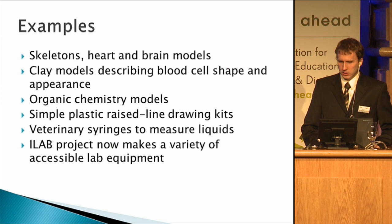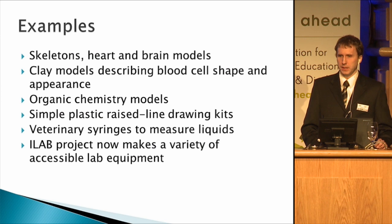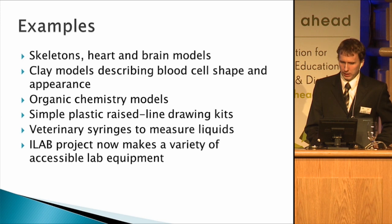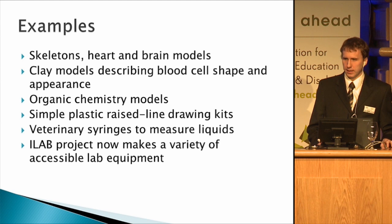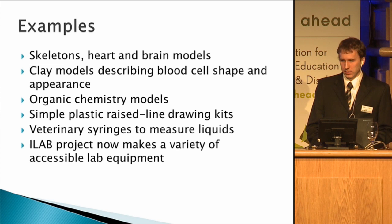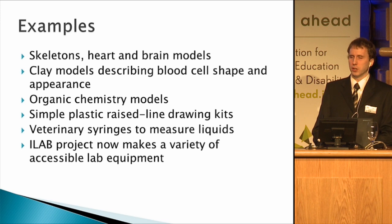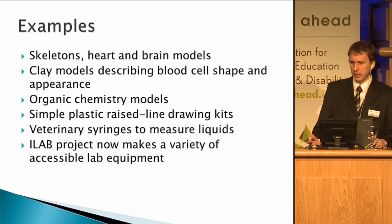How else did we adapt? We used models of skeletons and heart and brain models, clay models when we needed to, the same organic chemistry models other people used to click together to understand the relationship between atoms and bonds. A simple plastic raised line drawing kit — I would work with a reader who would find a picture in the text, copy it in raised line onto the kit and tell me what they were drawing. In that way I could learn the structures of molecules and relationships in biology. There were veterinary syringes that could dispense a predetermined volume of liquid for the laboratory. Now there's the iLab project in the States that makes accessible lab equipment — things like pH meters, color detectors, and spectrometers — and with Bluetooth and other common interfaces, the ability to have these machines talk to accessible equipment is even higher now.